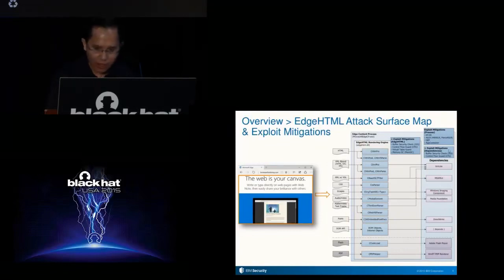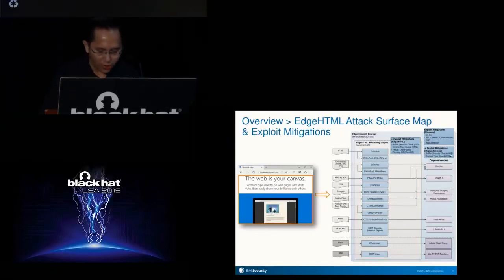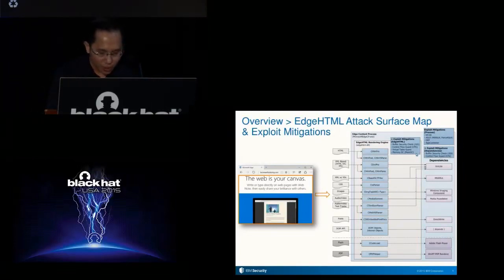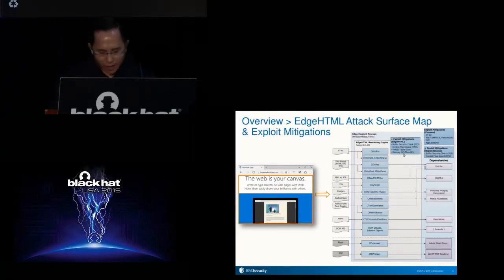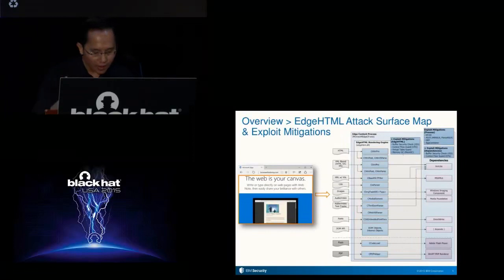These additional mitigations are stack buffer security check, or GS, and the recently introduced control flow guard. Finally, there are exploit mitigations specifically applied to EdgeHTML to handle certain types of memory corruption — these are the virtual table guard and MemGC. That is just a quick rundown of the internal mechanisms at work; I'll discuss their details in later slides.